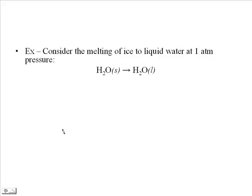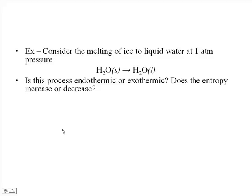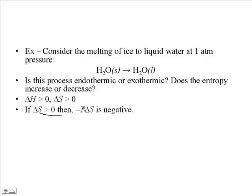Consider water melting — going from the solid state to the liquid state at one atmosphere pressure. Going from solid to liquid is endothermic, since it must absorb heat, just like boiling is endothermic. Anytime you go from solid to liquid or liquid to gas, it's an endothermic process. The entropy also increases because you're going from a solid to a liquid state, increasing randomness. So in this case, delta H is positive and delta S is positive. If delta S is positive, then negative T delta S must be negative, since temperature is always positive.